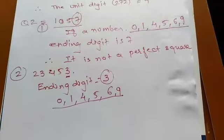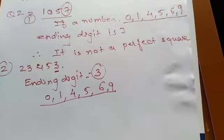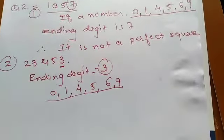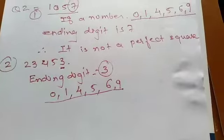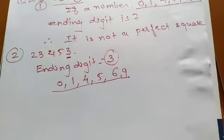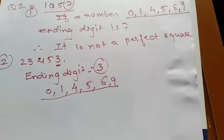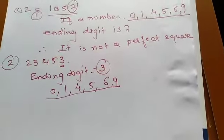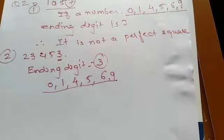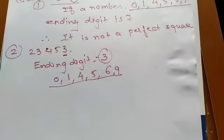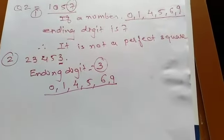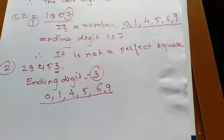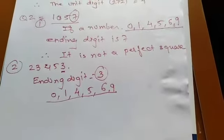So question number 2 will solve like that only. Here the number is 23453. The ending digit that is at unit place there is 3. But as the rule says there should be 0, 1, 4, 5, 6, or 9. Then only the given number is a perfect square. But here it is 3.